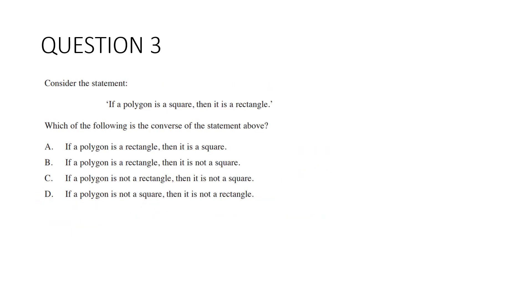Question 3. Consider the statement: if a polygon is a square, then it is a rectangle. Which of the following is the converse of the statement above? For the converse, we want to switch these two around. So we say if the polygon is a rectangle, then it is a square. It is A.